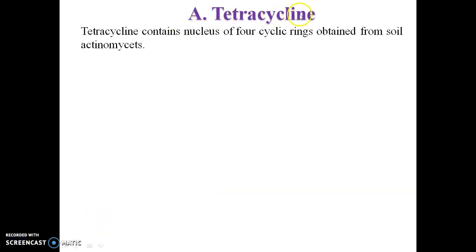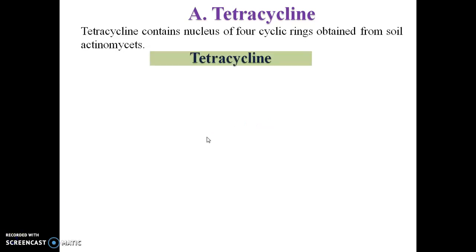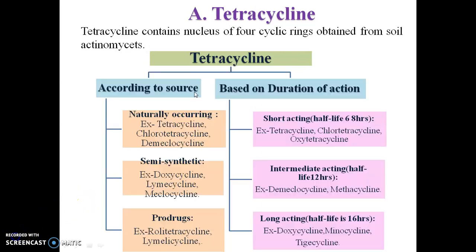First, tetracycline — it is called tetracycline because it contains in its structure a four-cyclic ring, which is obtained from the soil actinomycetes. Considering the classification of tetracycline, it is classified into two categories: first, according to its source — naturally occurring tetracycline (tetracycline, chlorotetracycline), and semisynthetic derivatives and various prodrugs.